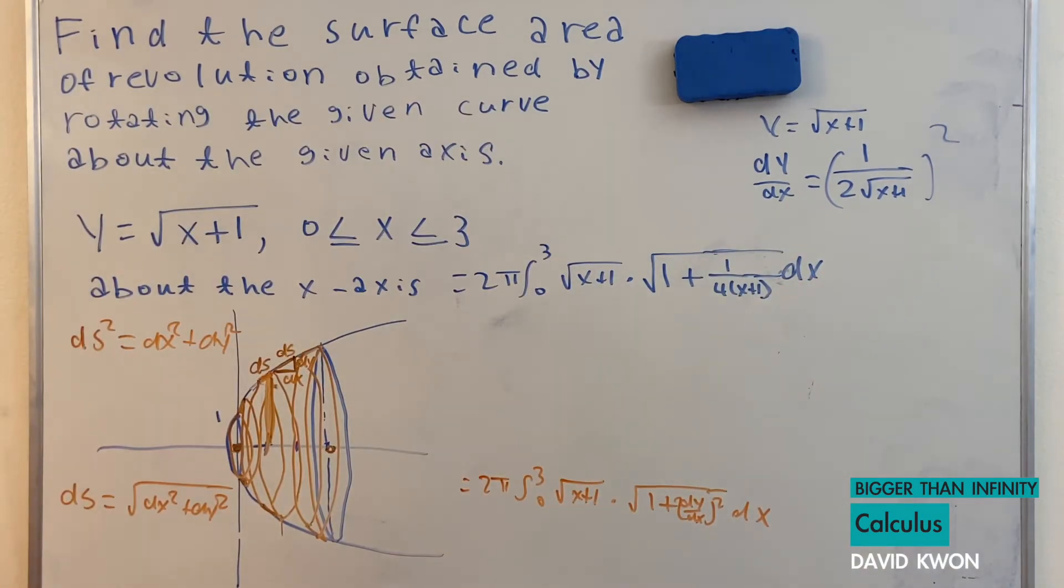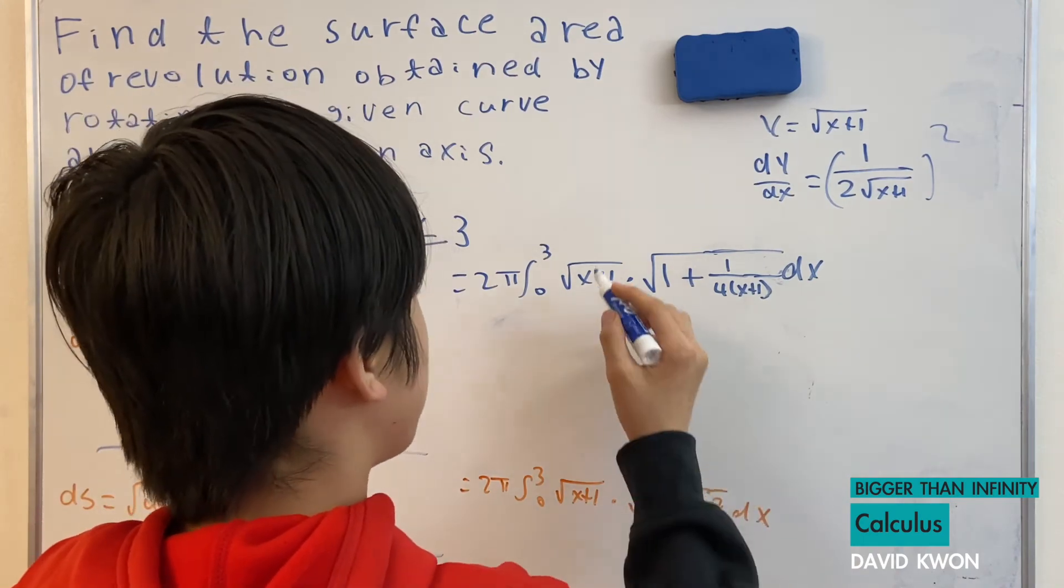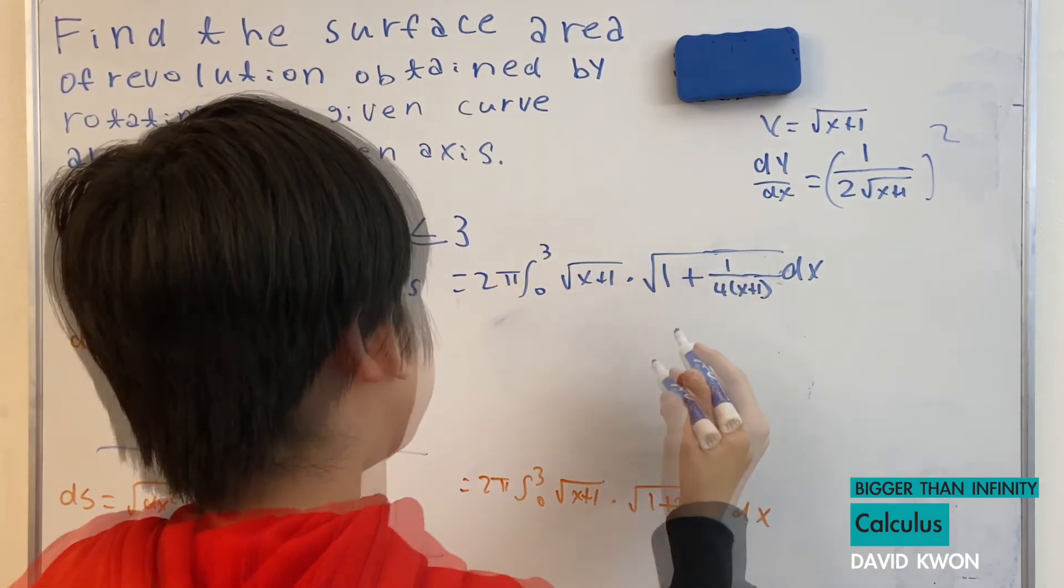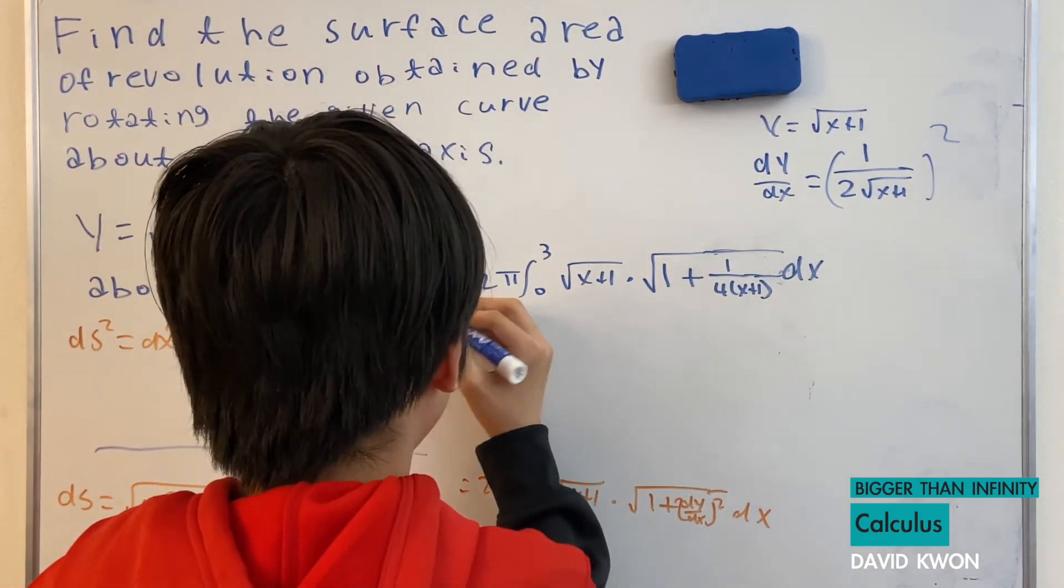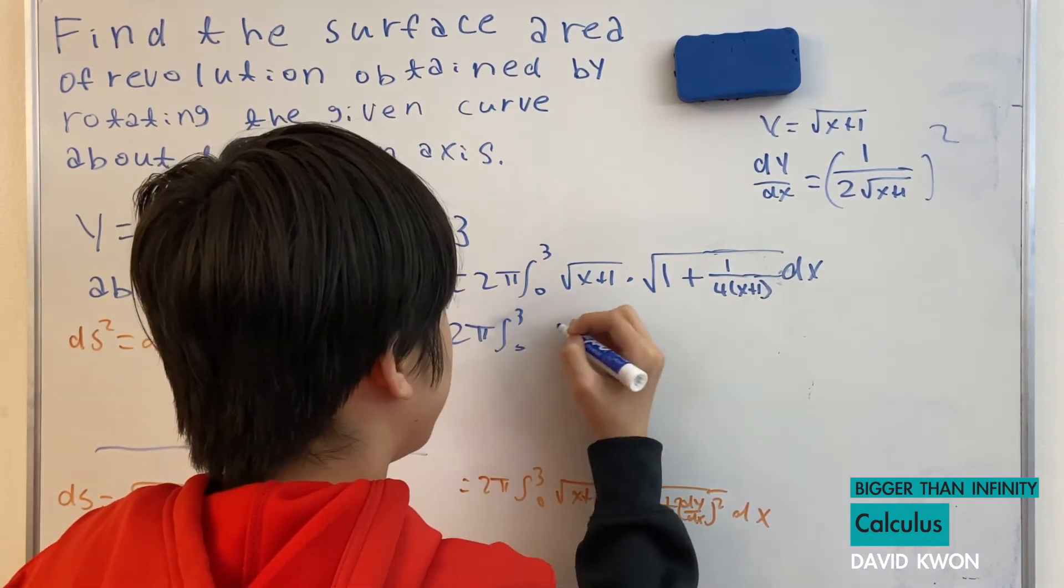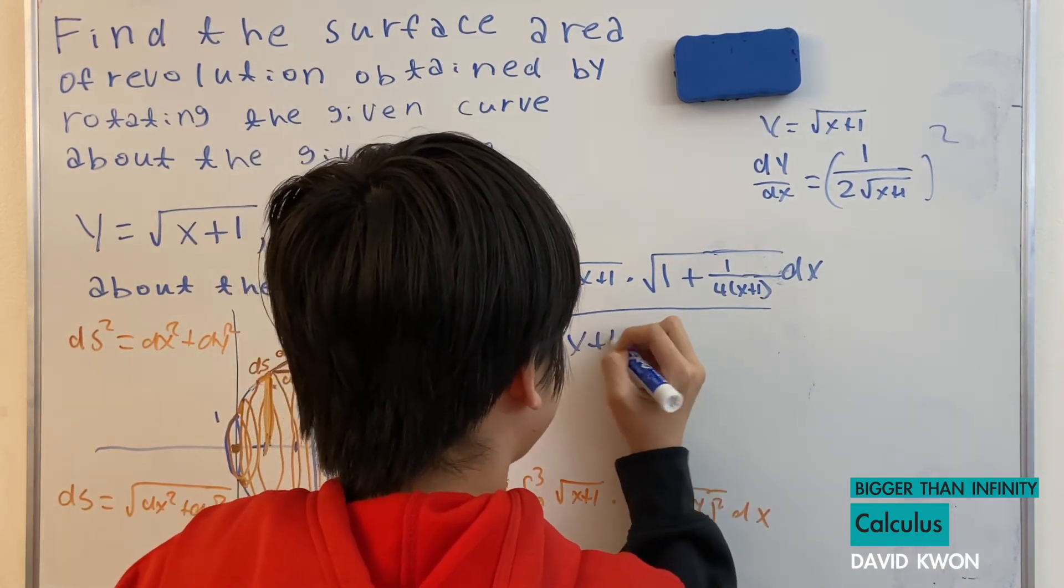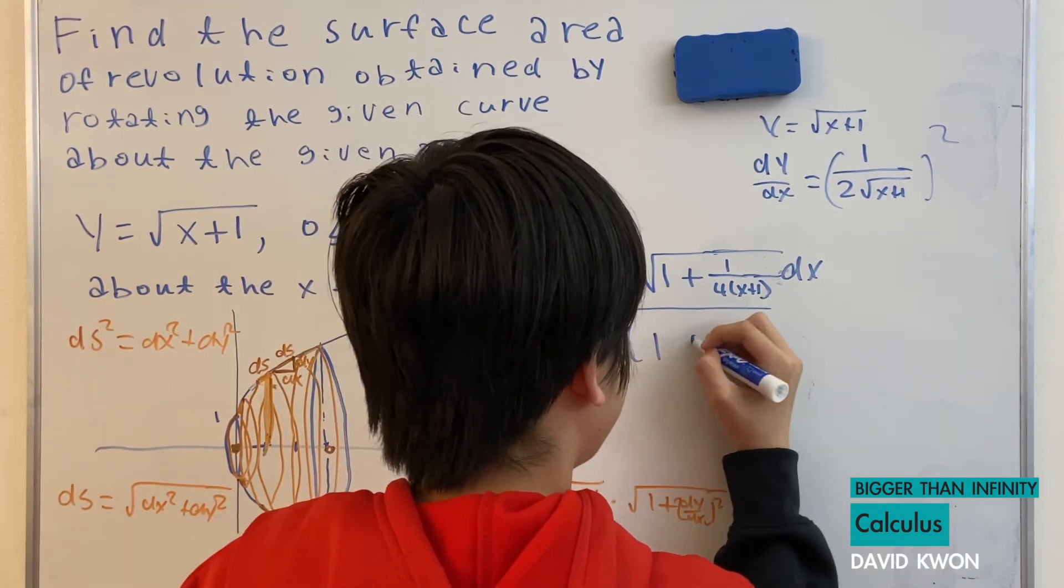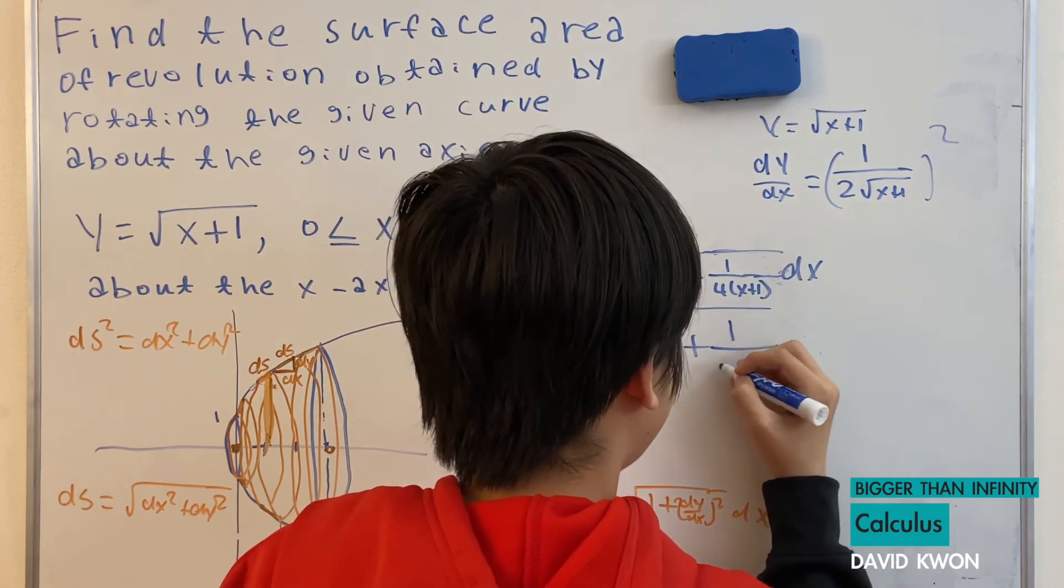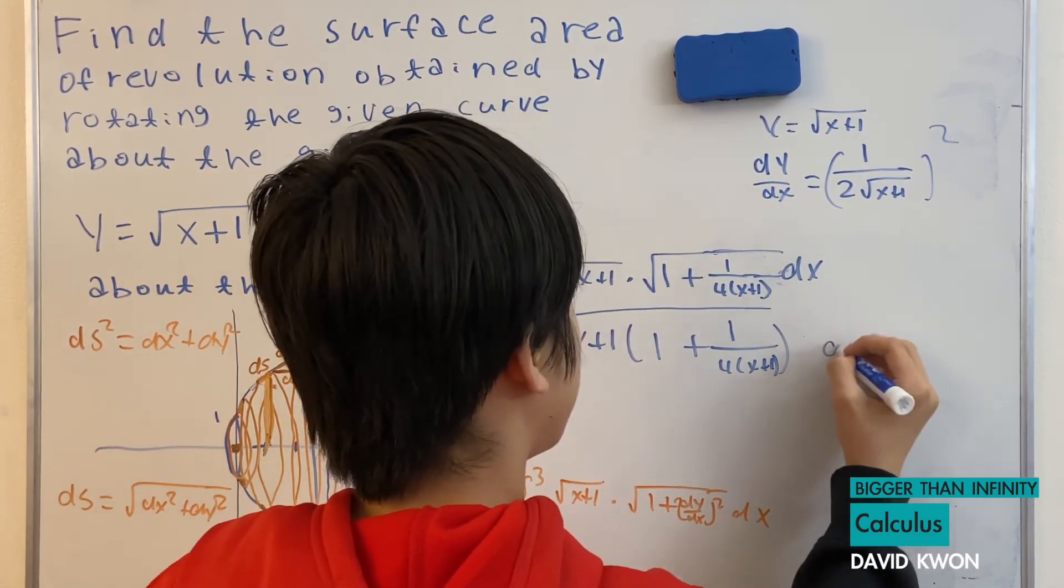So times dx. And now from here, what do I do? What do I do? Well, that is very simple. I just multiply this by this and this just by saying that it's really confusing. So I will show it in visual. So that is just square root of x plus 1 times 1 plus 1 over 4 times x plus 1. So simple. And times dx.